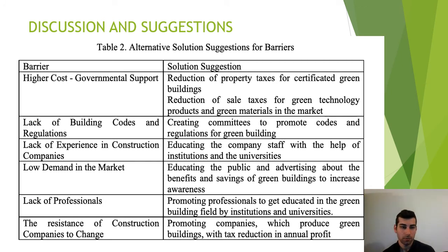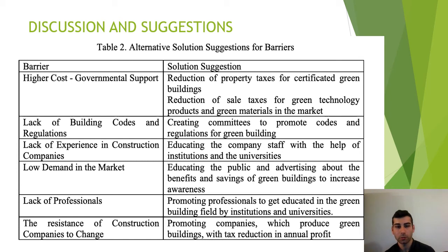Here is another table suggesting possible solution methods for the most common barriers to green building production. For higher cost, the solution can be governmental support — such as reduction of property taxes for certified green buildings and reduction of sales taxes for green technology products and materials on the market. To overcome the lack of building codes and regulations, creating committees to promote and develop green building codes can be a solution.